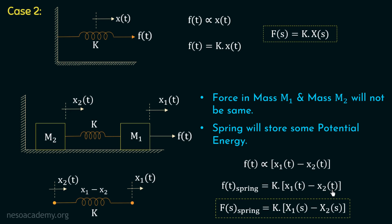When a spring is attached between two masses, the displacement in the two masses will be different because the forces acting on them are different. The spring absorbs some force in the form of potential energy. In case number 1, there was a rigid connection, so forces and displacements were the same. But here, the spring absorbs some force, so the forces and hence the displacements acting on the two masses will be different.